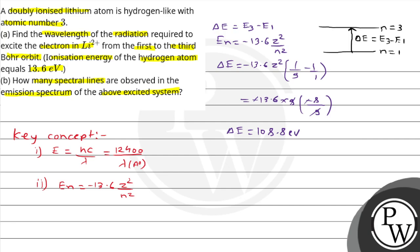तो अभी हमें energy मिल गई: 108.8 electron volt। तो हम लोग उसकी corresponding wavelength निकाल सकते हैं: λ = 12400 / 108.8 electron volt। यहाँ से जो wavelength मिलेगी वो होगी 114 angstrom।